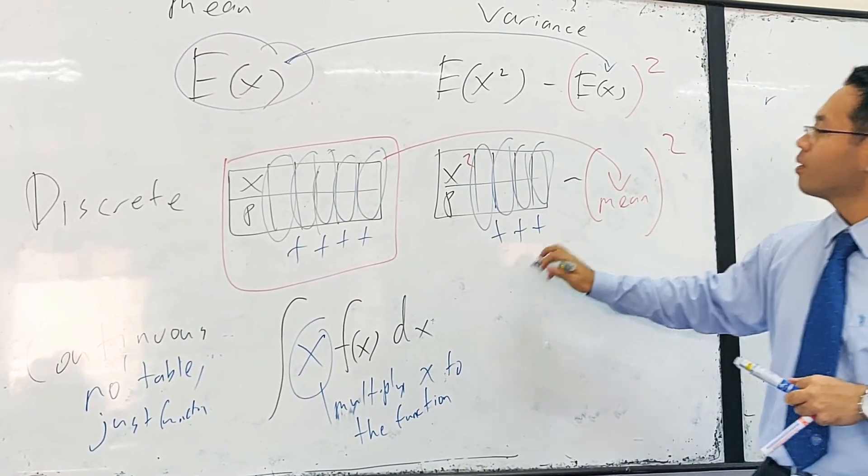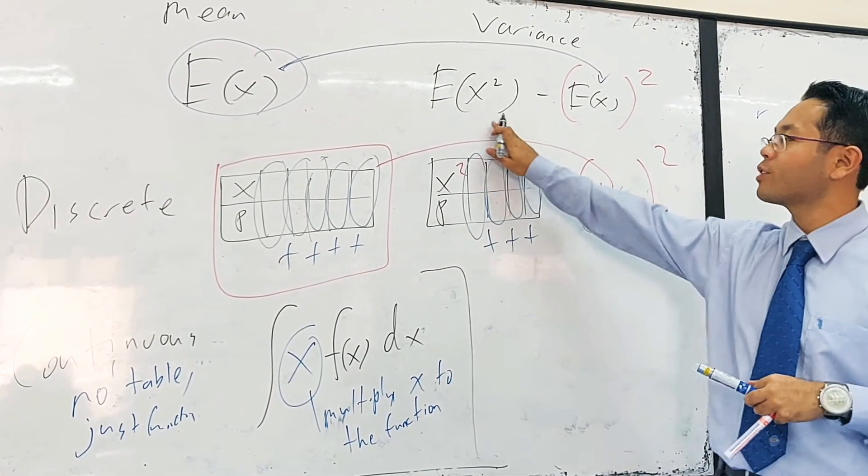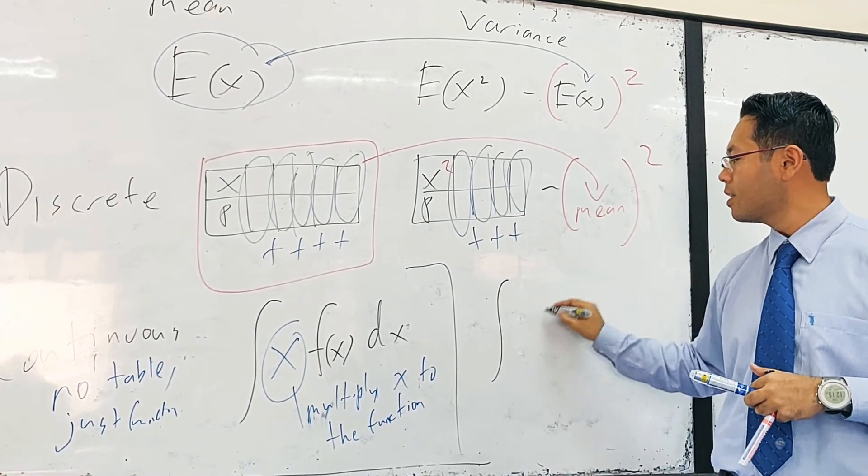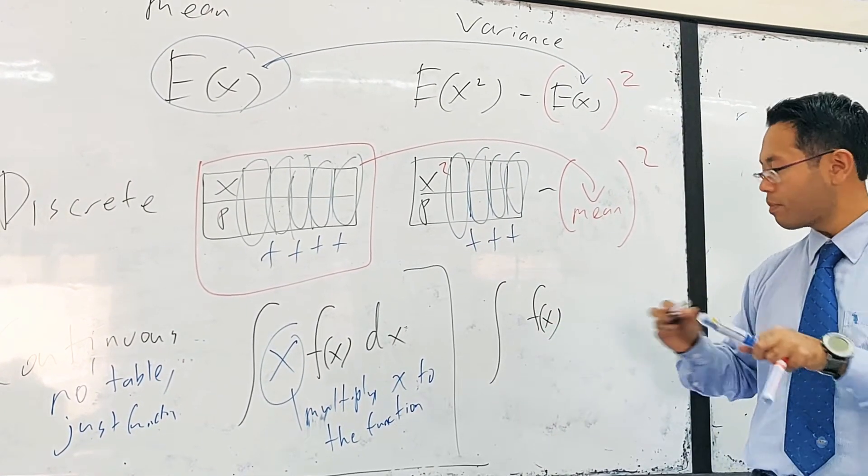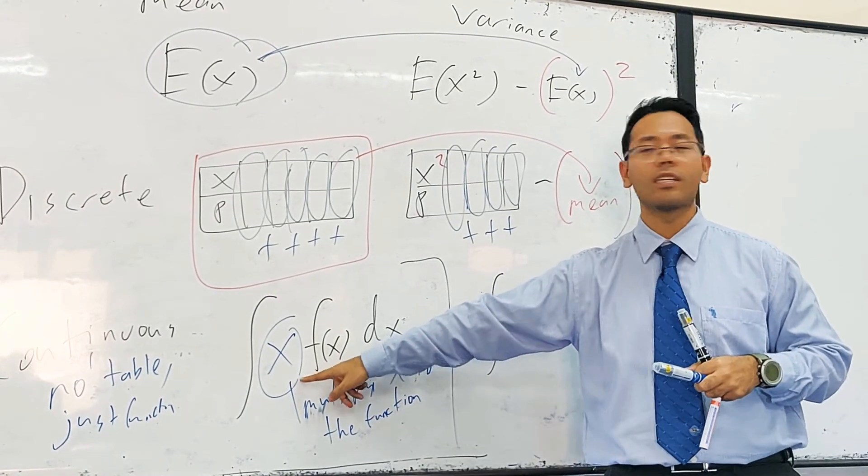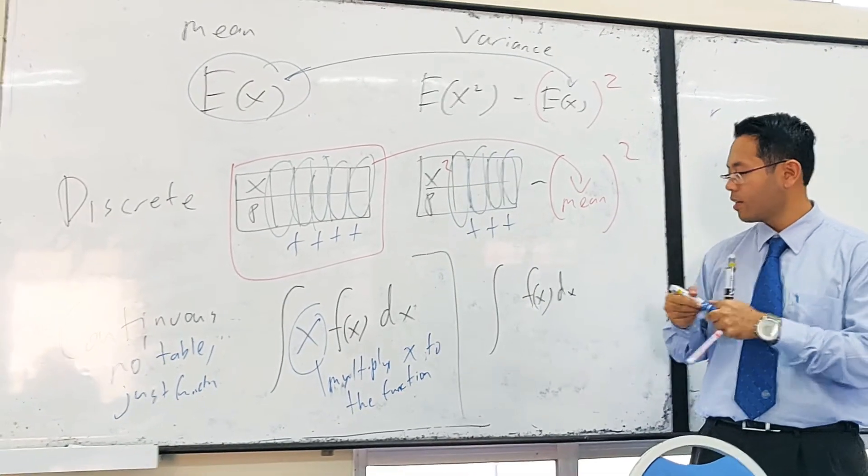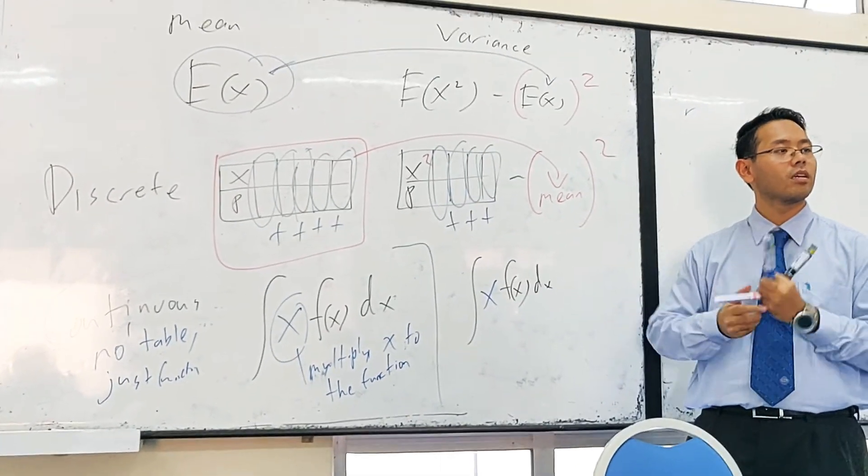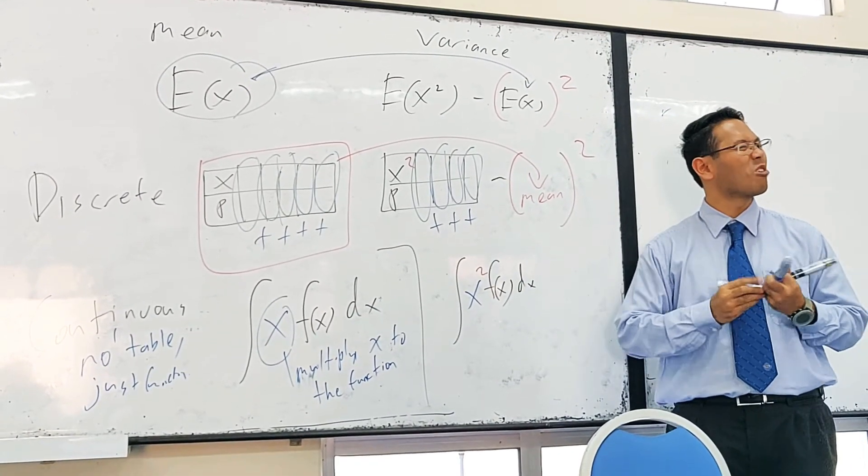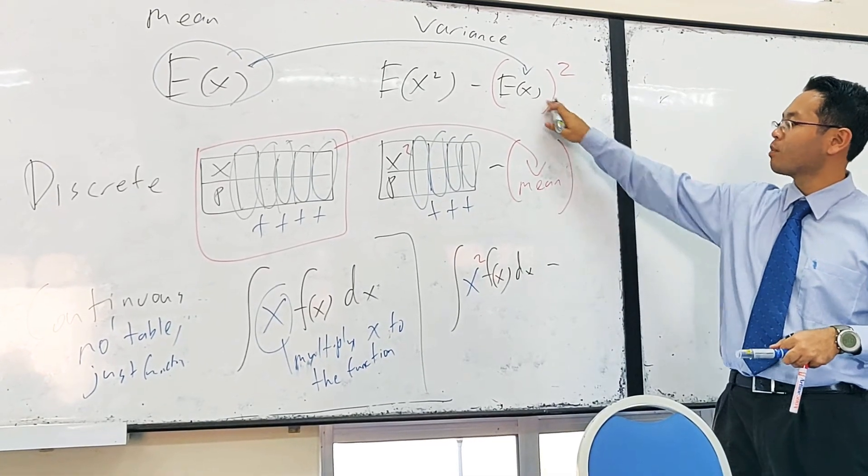So what about for E(X²) for continuous? In this case, we multiply by x squared. This one I multiply by x, this one I multiply by x squared. So it goes the same thing with x squared. Understand? Yes, clearly.